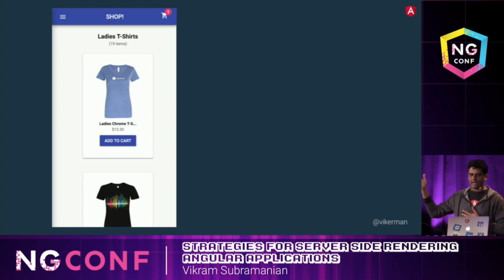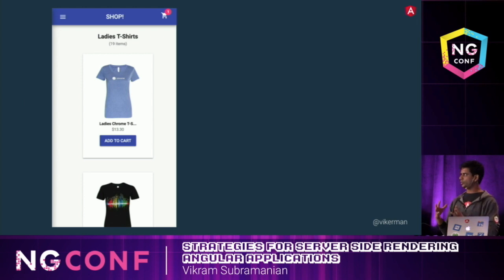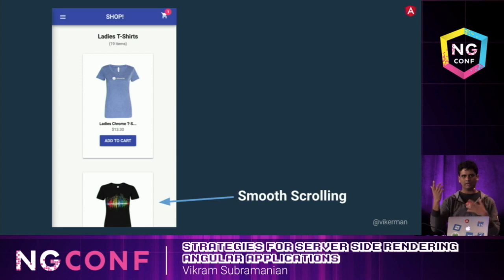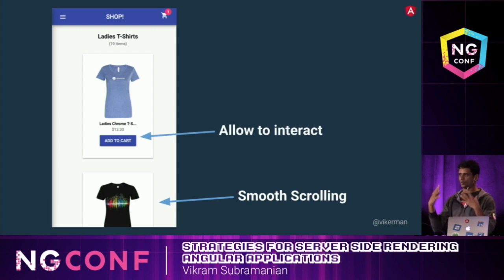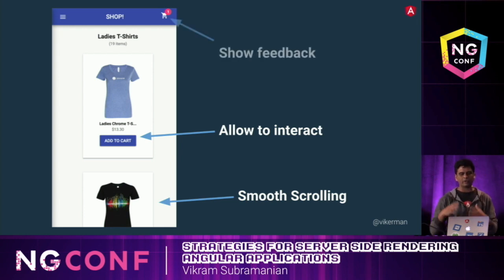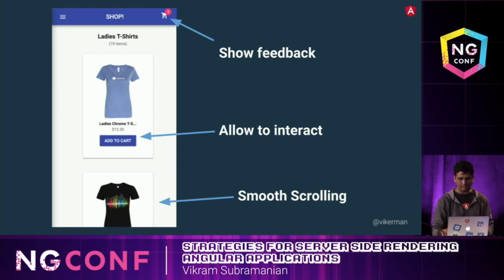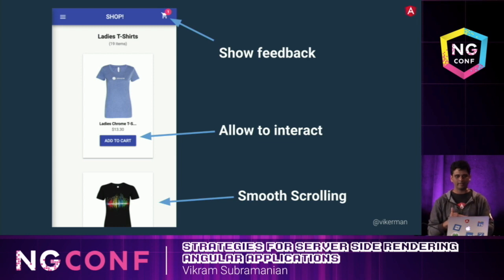We want to break the JavaScript into smaller chunks and load it prioritized by importance. Looking at our example application, some of the important things the user wants to do as soon as they see the server-rendered view is to be able to scroll and browse the e-commerce site, and add stuff to cart — that's what you want them to do, you want them to buy stuff. That is the part of the app you want to enable as quickly as possible, along with showing feedback as soon as they add stuff to the cart so they're not confused about what happened.